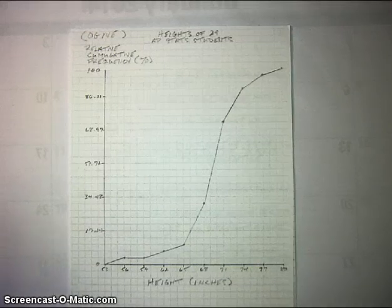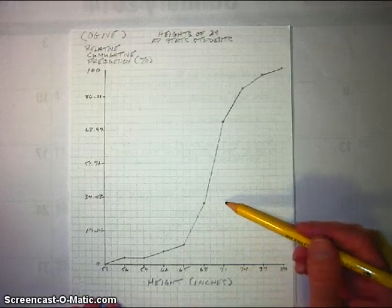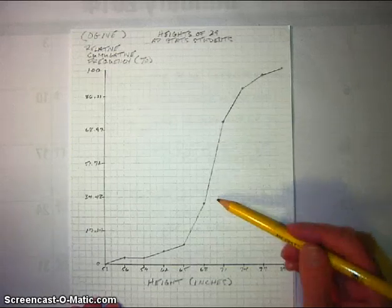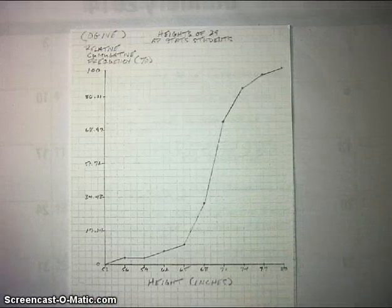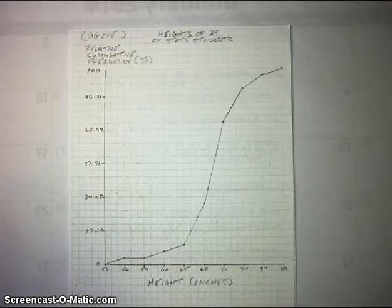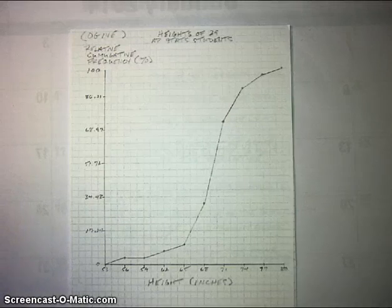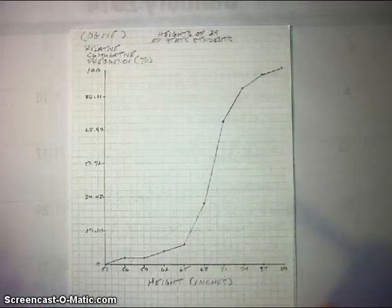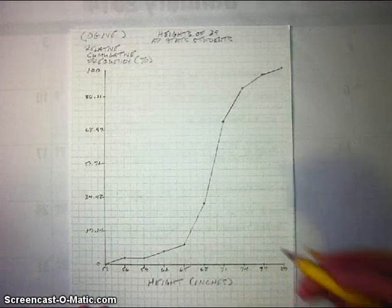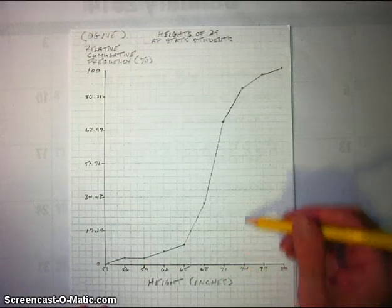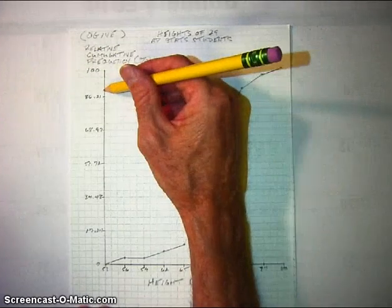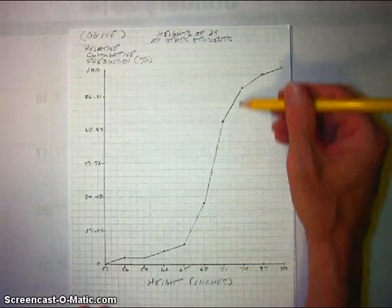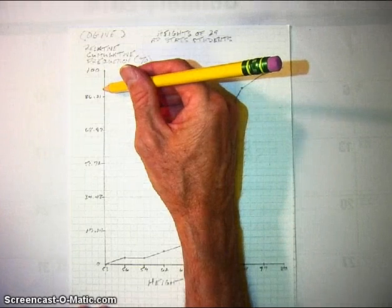The data values are somewhat obscured by the picture. We can figure out from the ogive the relative frequency or actual count of observations in a particular interval, but we can't say exactly what those data values in that interval might be. That's a weakness that histograms and ogives share. If you are calculating a percentile from a data value, your percentile is only going to be approximate. Find the data value you're interested in, go up to the ogive, and then go across to the percentile — so 74 inches would be at about the 90th percentile on this ogive.